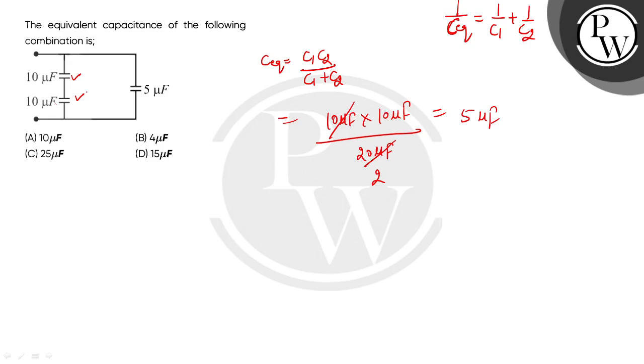Now the equivalent of 5 and 5, what is it? In parallel, basically our equivalent—the equivalent of 5 and 5 in parallel.